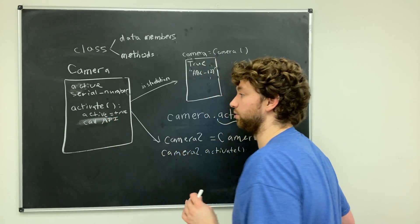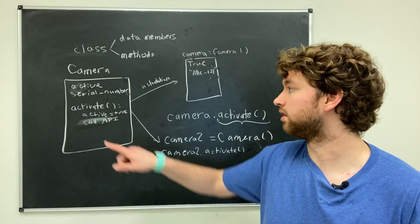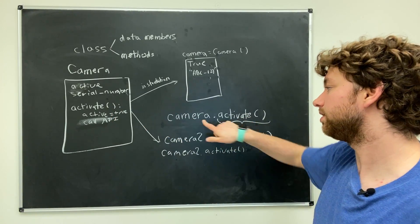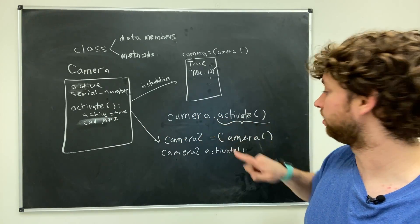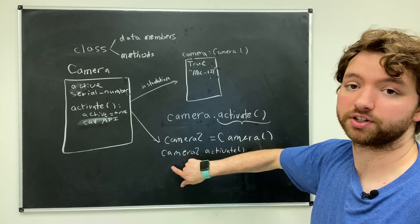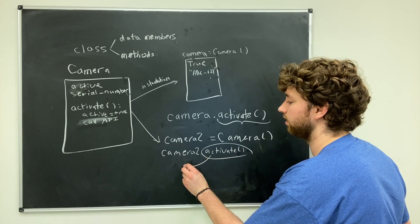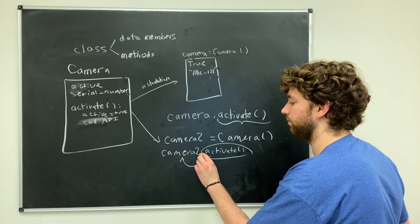And it might even call the camera's API. We're not going to get into the code on how to do that right now, but you could actually turn on a physical camera just by activating it in our code. When we call activate on this camera, it's going to activate that one. When we call activate on this camera, it's going to activate this one. It's completely specific to whatever camera it's attached to with this dot operator.